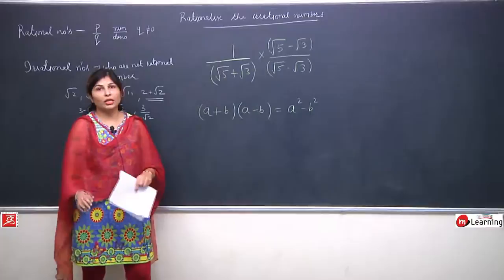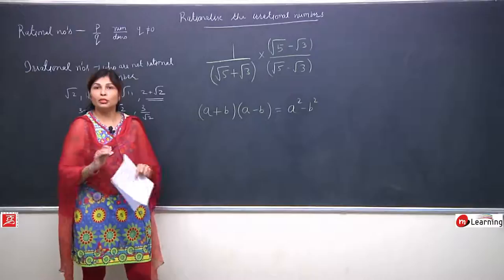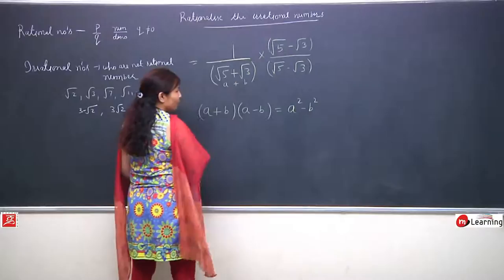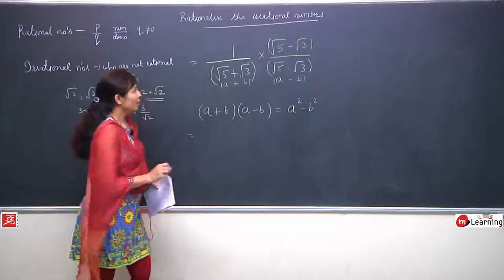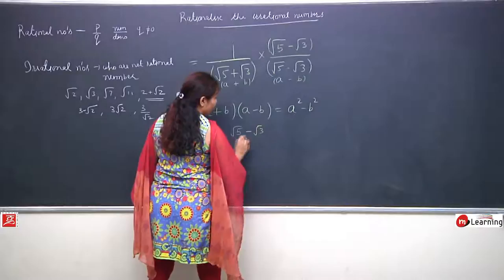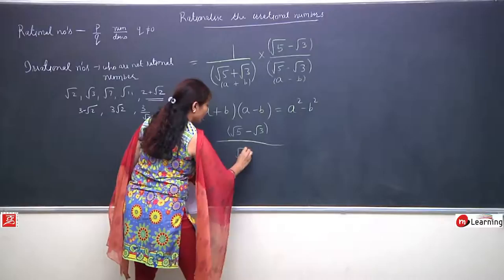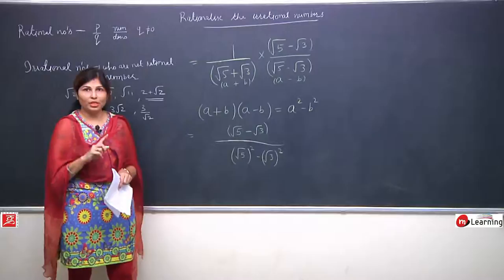Now the important identity I noted earlier will come into play. What was the identity? (a + b)(a - b) = a² - b². Friends, these identities we have been studying since class 6 - they are the base of algebra and we should always keep them in mind. They can be applied anywhere in any question. Now the identity's part begins. Look at the denominator - you can see a form similar to this identity. If I call this 'a' and this 'b', this is (a + b) and the other is (a - b).